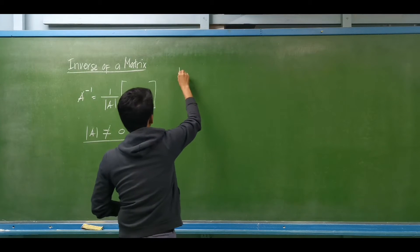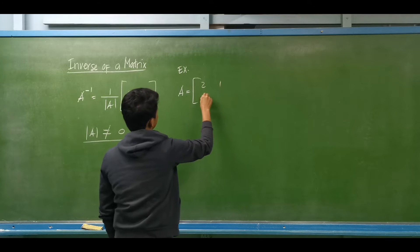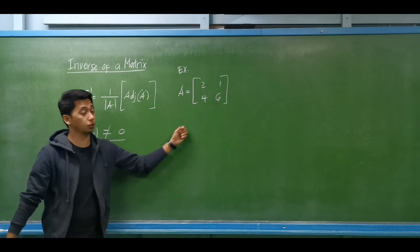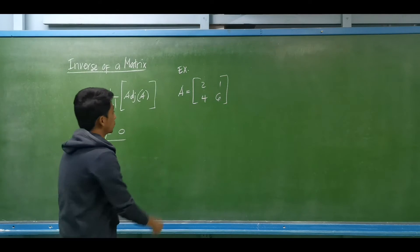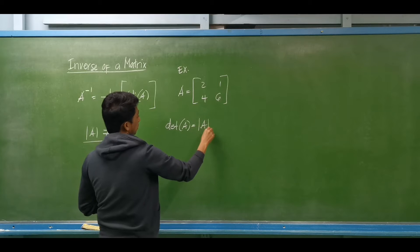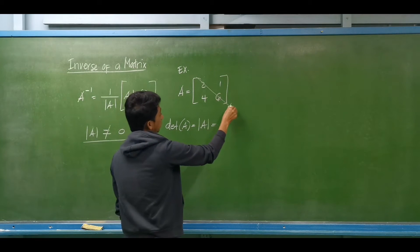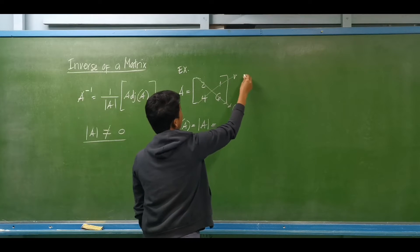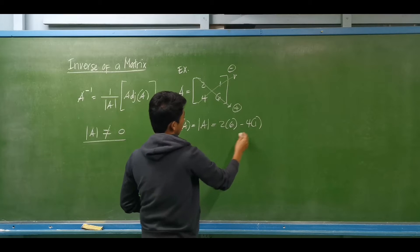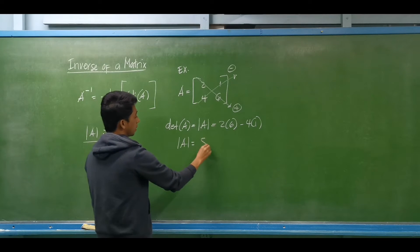Let's try a 2 by 2 matrix. We are required to determine the inverse of matrix A. First we have to determine the determinant of matrix A. Since this is a 2 by 2, we can use the basket-pick method or the diagonal method. We get the product of the diagonal elements: downward to the right will be positive, upward to the right will be negative. So we have 2 times 6, minus 4 times 1, giving us 12 minus 4, which equals 8.